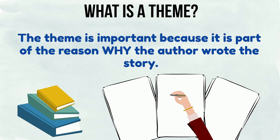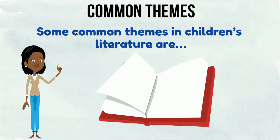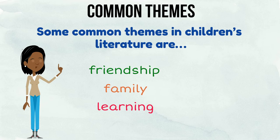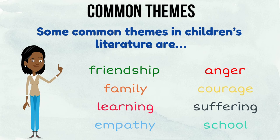Some common themes in children's literature are friendship, family, learning, empathy, anger, courage, suffering, and school. Some authors may put more than one theme in their books if they are closely connected.